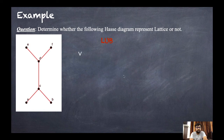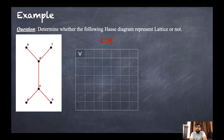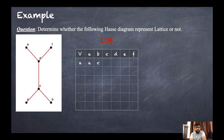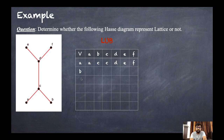In the figure there are six points, so the table will have elements a, b, c, d, e, f in both rows and columns. First, what is the LUB of a and a? Since it is the same point, LUB is a. LUB of a and b is c. LUB of a and c is c. LUB of a and d is d. LUB of a and e is e. LUB of a and f is f.